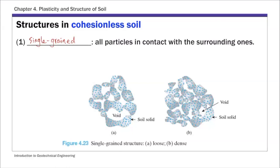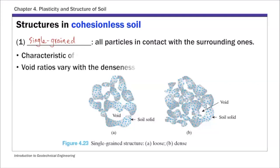Single grain structure is a pretty stable structure where each soil particle is in contact with all its surrounding particles. You can have loose and dense states, depending on the shape, size, and composition of soil particles, giving different packing densities. For sands, single grain structure is the characteristic structure, and the void ratio depends on particle size, shape, and composition.